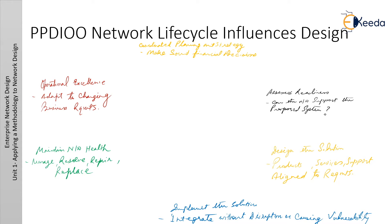Let us discuss design as an integral part of PPDIOO methodology, or P-squared-DIOS-squared network life cycle methodology, which is shown here in this figure. It reflects the phases of a standard network's life cycle. The first phase is the Prepare phase. The prepare phase involves establishing the organizational or business requirements, developing a network strategy, and proposing a high-level conceptual architecture, identifying technologies that can best support the architecture. Financial justification for the network strategy is established by assessing the business case for the proposed architecture.